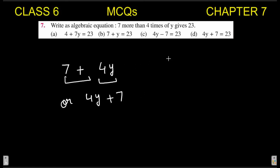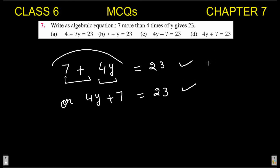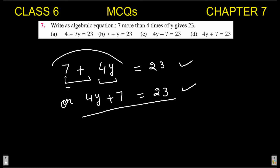The result is 23, so the equation is 4y + 7 = 23. Checking the options: 'four plus seven y' — not correct; 'seven plus y' — not correct; '4y − 7' — not correct; '4y + 7 = 23' — correct. This equation is given in option D, so D is your correct answer.